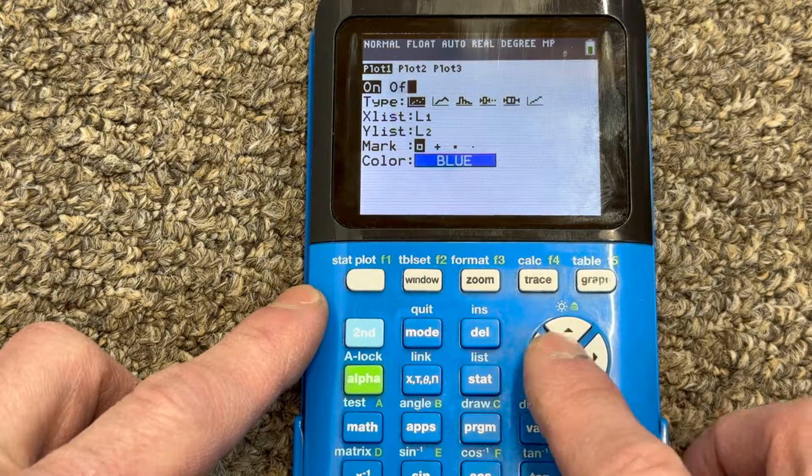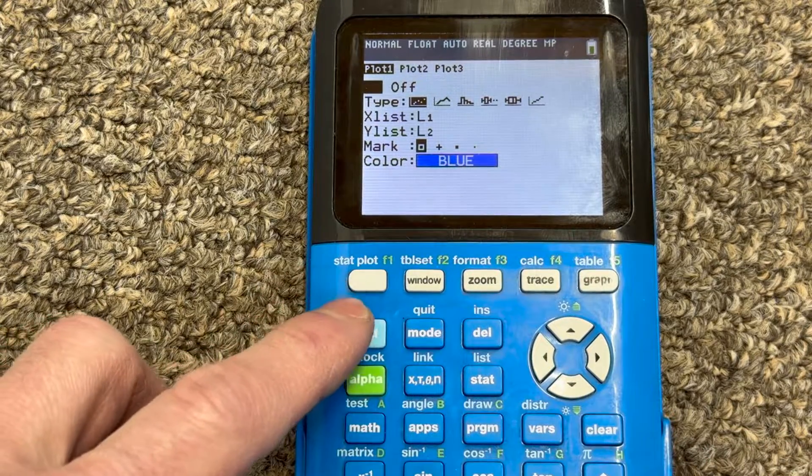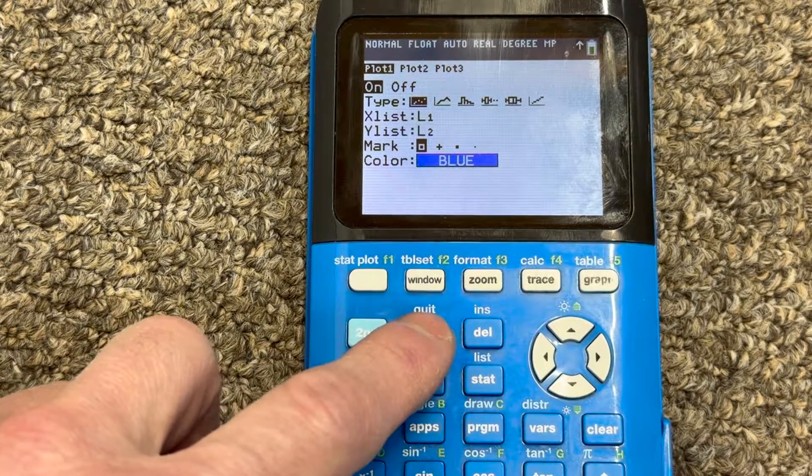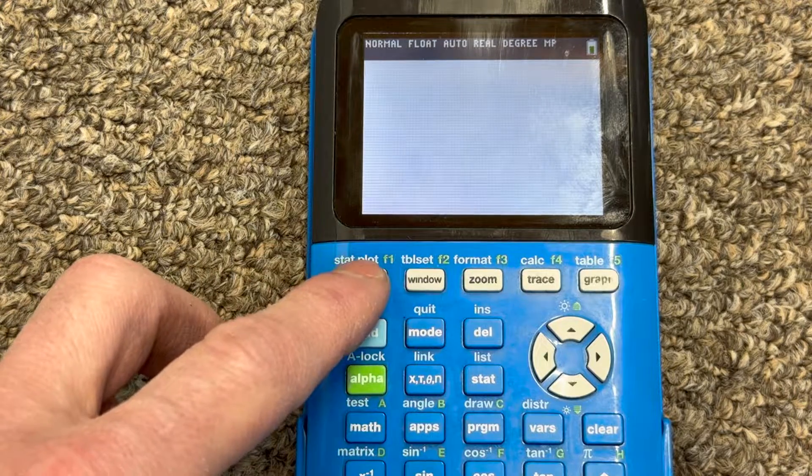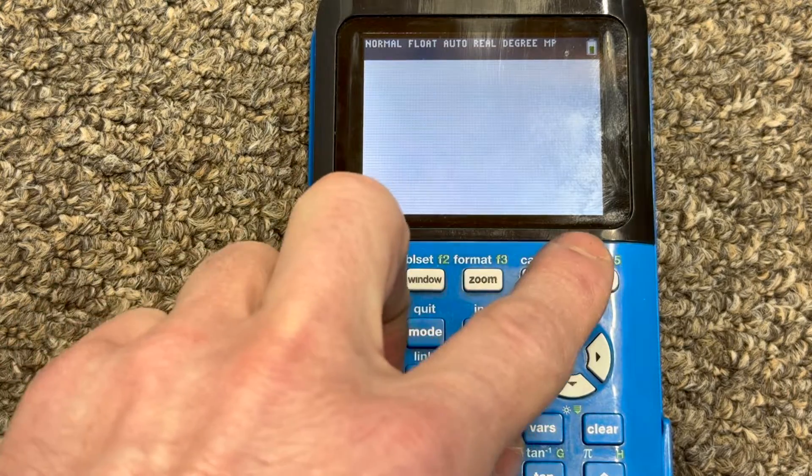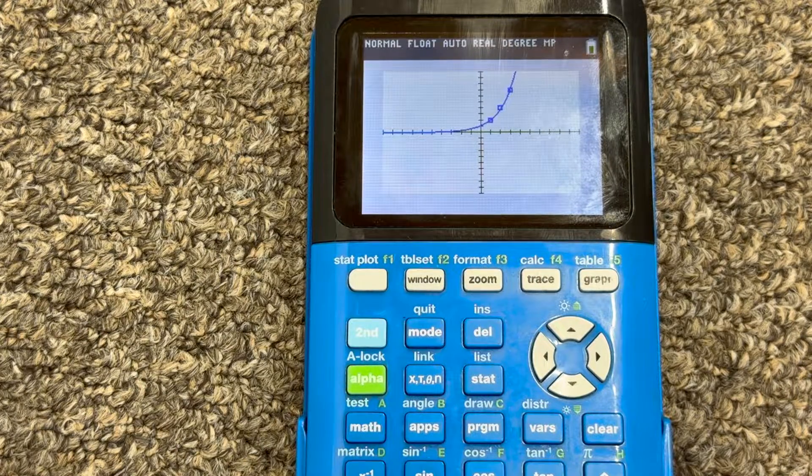So you're going to want it to be on, and then press enter. And then if you press second, and then the quit key right next to the second key, that takes you back to your home screen. And then if you press graph now, you should see the points and then the graph that's going through those points.